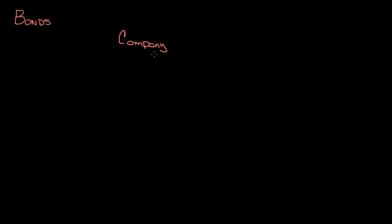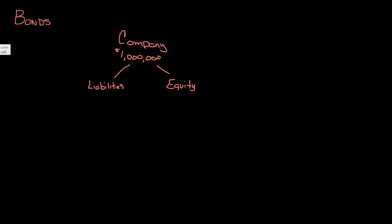If you're thinking about a company — say a company needs a million dollars for some type of capital project, whether they're going to build a new building or launch a new product line — the company needs a million dollars. How can the company get that million dollars? You've probably already learned that the company can either generate liabilities or generate more equity by selling stock. In this video, we're going to talk about the liability side.